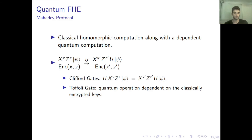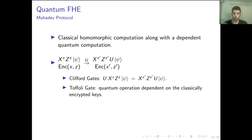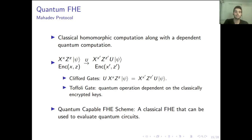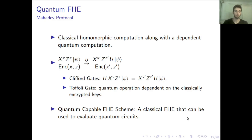The problem is with the Toffoli gate, where the case is not the same, and at some point we would have to perform a quantum operation dependent on the classical encryption keys. This is not trivial at all. Mahadev showed that if you have a classical FHE scheme with certain specific properties, then you can use that to do this computation and thus evaluate quantum circuits. A classical FHE with said properties is called a quantum-capable FHE scheme.